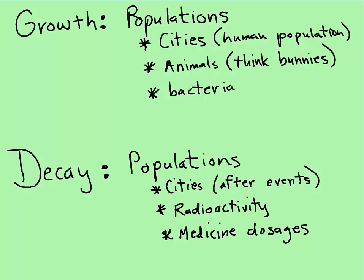Other ways that we use logarithmic and exponential functions: growth — exponential or logarithmic growth — populations, whether it's cities, animals, or bacteria. Think bunnies and how quickly those grow. Decay might involve cities: if there's a big natural disaster or human disaster, people might choose to leave — that would be a decay. Radioactivity decay is called half-life; these are half-life problems you'd encounter in science classes. And medicine dosages — medications lose their strength, so you have to take your medicine every four hours or it's not as effective. Those would also be decay problems.